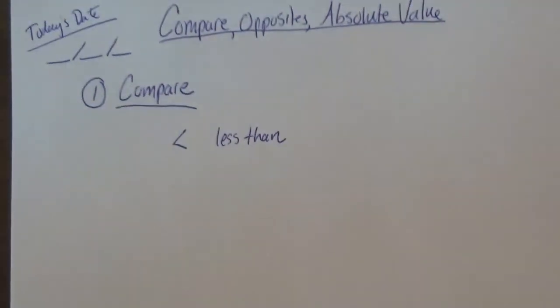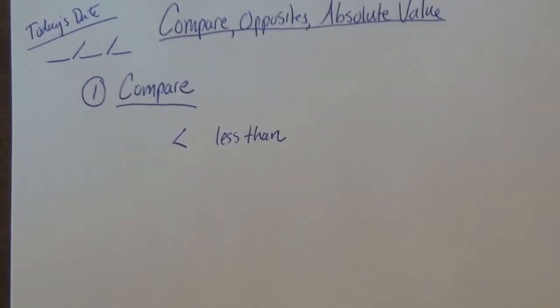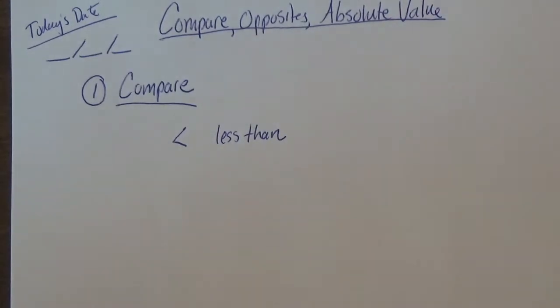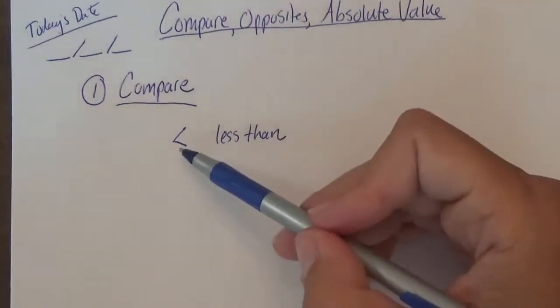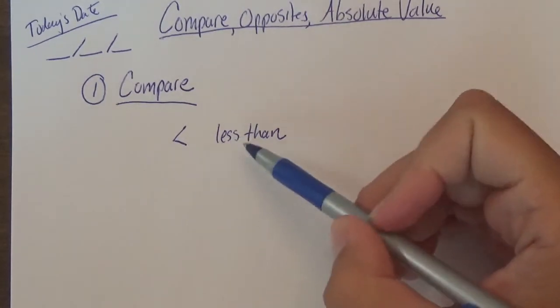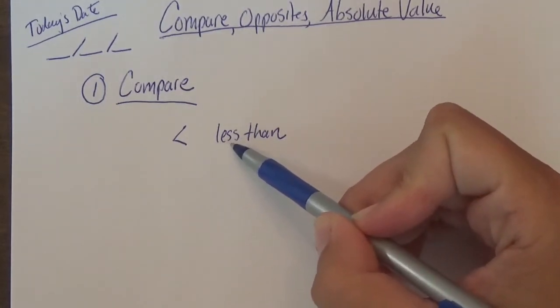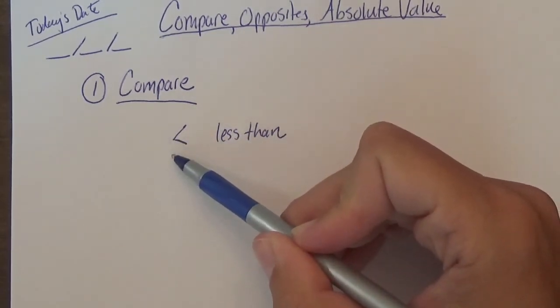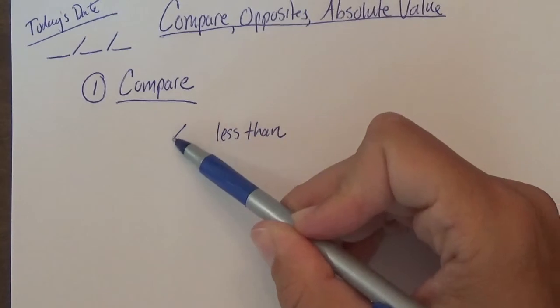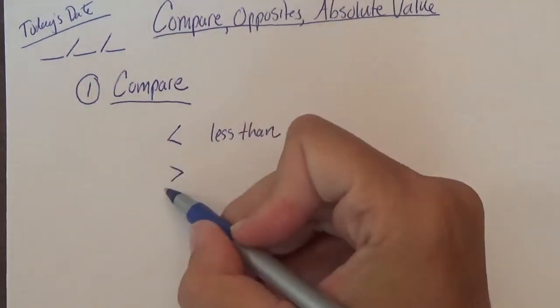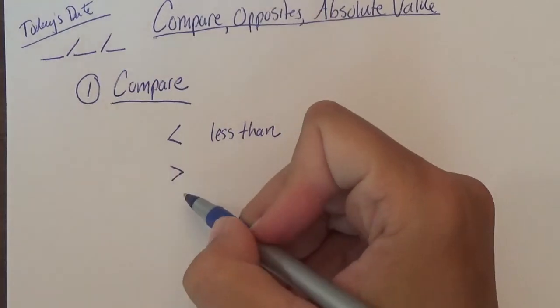Now I want you to memorize that that symbol is less than. I know some people think about the alligator eating the bigger number. That's fine if it works. But I want you to memorize this symbol. So read the symbol just like a word. I read the word less from left to right. Same thing with the symbol. I start on the left hand side. It's got the smaller part. So that is the less than symbol.